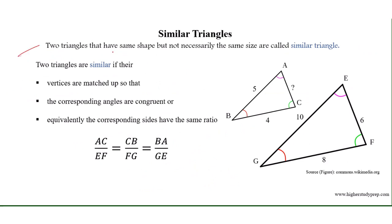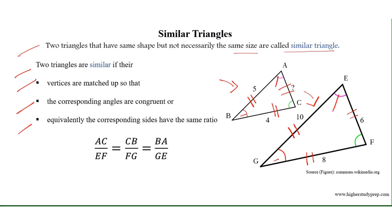Similar Triangles: two triangles that have the same shape but not necessarily the same size are called similar triangles. Two triangles are similar if their vertices can be matched up so that corresponding angles are congruent, or equivalently, corresponding sides have the same ratio. For triangles ABC and EDF, we can write AC divided by EF equals CB divided by FD equals BA divided by GE, where angles B and G, A and E, C and F are congruent. Since BA equals 5 and GE equals 10, the ratio is one-half.